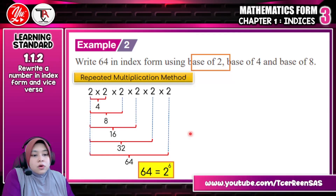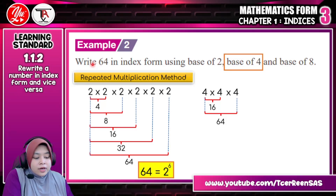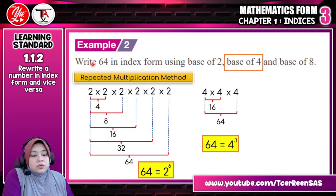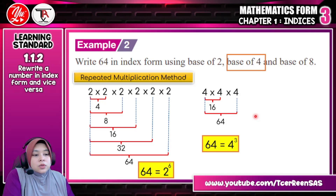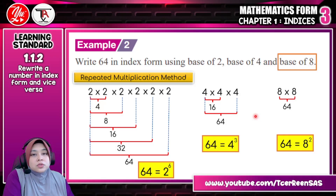For base 4: 4 × 4 = 16, × 4 = 64. So you have already reached 64 — that's 3 fours multiplied, so the answer is 64 equals 4 to the power of 3. For base 8: 8 × 8 = 64, so no further multiplication needed. There are 2 eights, so the answer is 64 equals 8 to the power of 2. That's what you need to do when asked to write a number using a certain base.